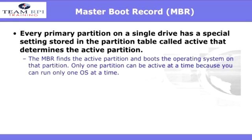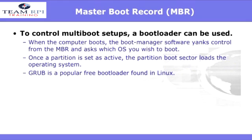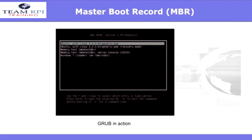The master boot record finds the active partition and boots the operating system on that partition. Remember, only one partition can be active at a time, mainly because you can only run one operating system at a time. However, it is possible to have a PC that boots into multiple operating systems, and for that you'll need special boot manager software like Grub, which is popular in Linux. Here's a look at what a Grub boot loader looks like. You can see I can have Ubuntu and Windows 7 on the same machine.